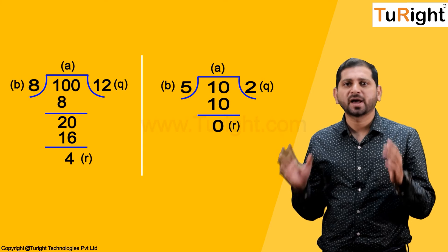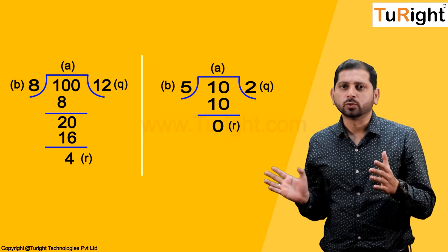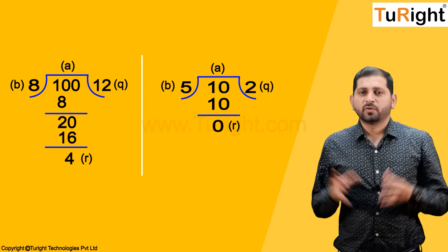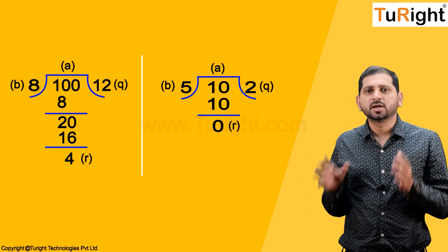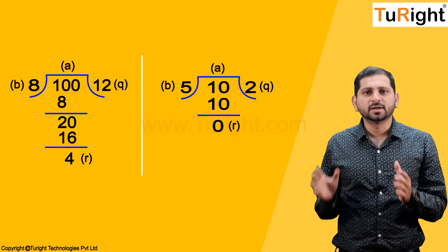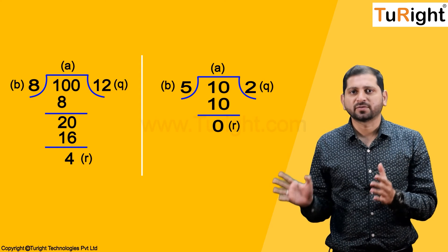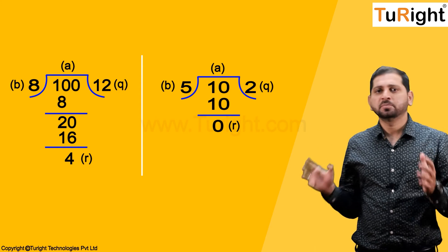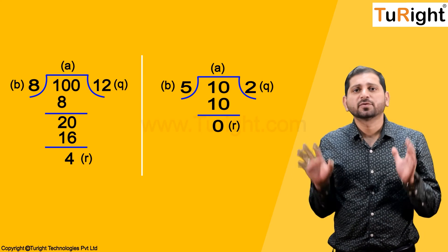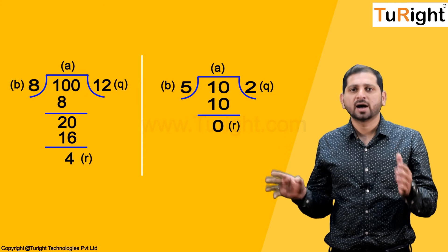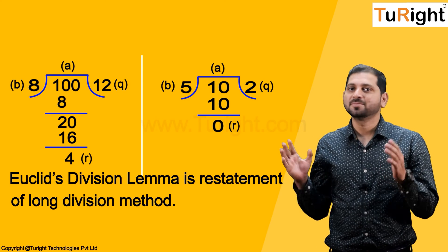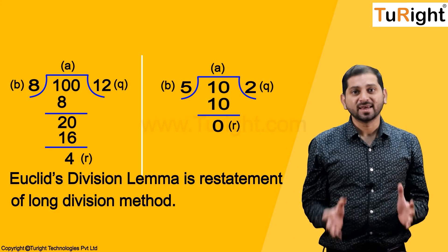For a given pair of integers, r is always fixed. When we did 100 ÷ 8, the remainder was 4 and quotient was 12. When we did 10 ÷ 2, the remainder was 0 and the quotient was 5. In all these cases, a and b being fixed means q and r are also fixed. Therefore, for any given pair of integers, q and r are always unique. This confirms that Euclid's Division Lemma is a restatement of the long division method.